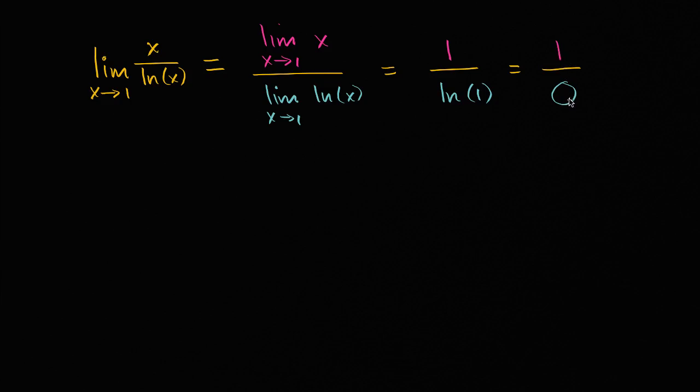If it was zero over zero, we wouldn't necessarily be done yet. That's indeterminate form. As we will learn in the future, there are tools we can apply when we're trying to find limits and we evaluate it like this and we get zero over zero.